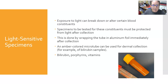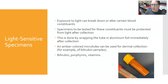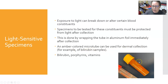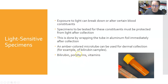Exposure to light can break down or alter certain blood constituents. Specimens tested for these constituents must be protected from light after collection by wrapping the tube in aluminum foil immediately after collection, especially if the collection tube is not a light-opaque tube. An amber-colored microtube can be used for dermal collections — for example, bilirubin samples for neonatal bilirubin testing. The specimens most needing light protection are bilirubin samples for therapeutic drug monitoring and most vitamins, which are very light sensitive.